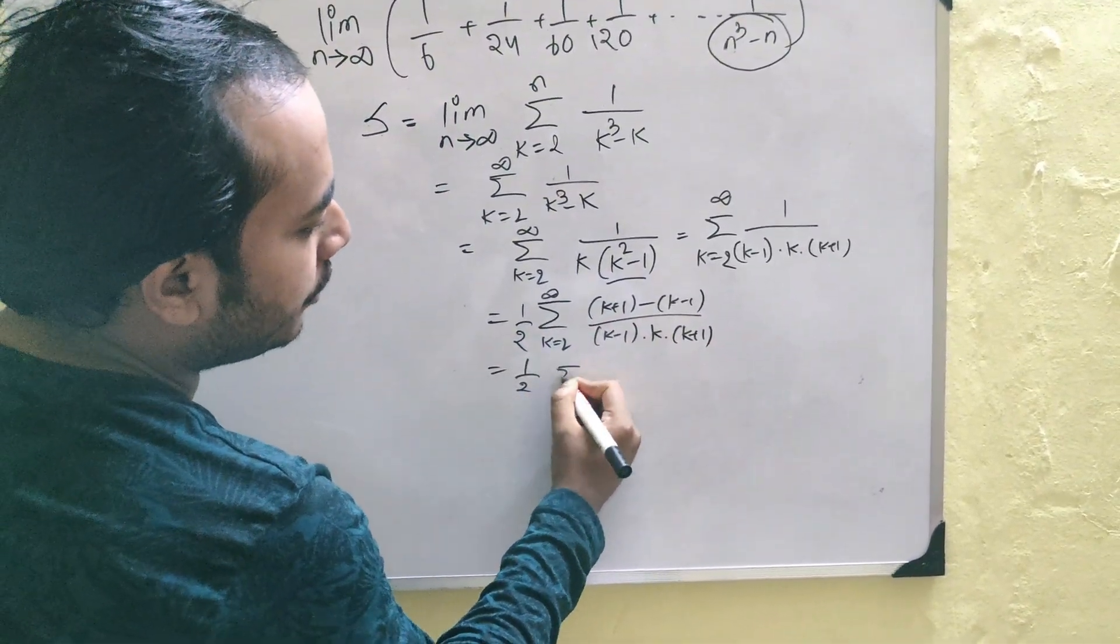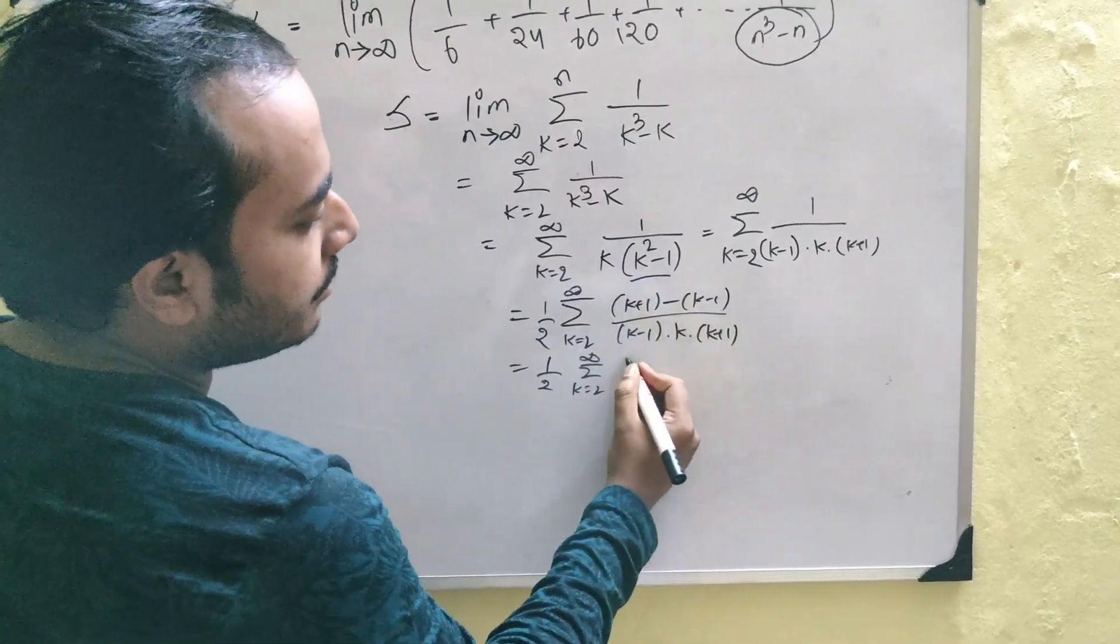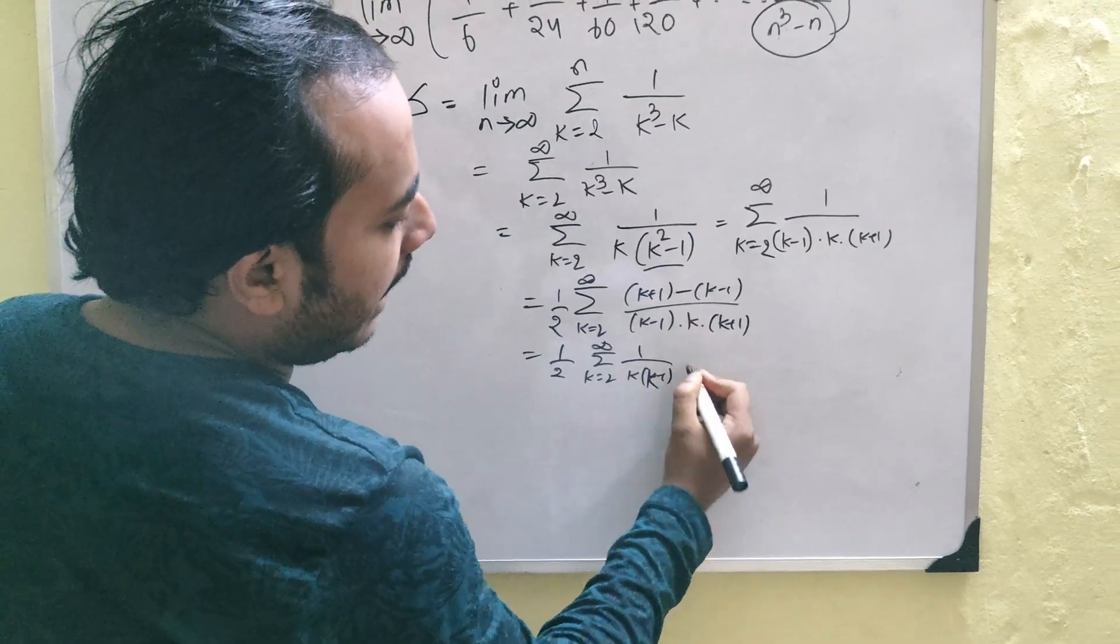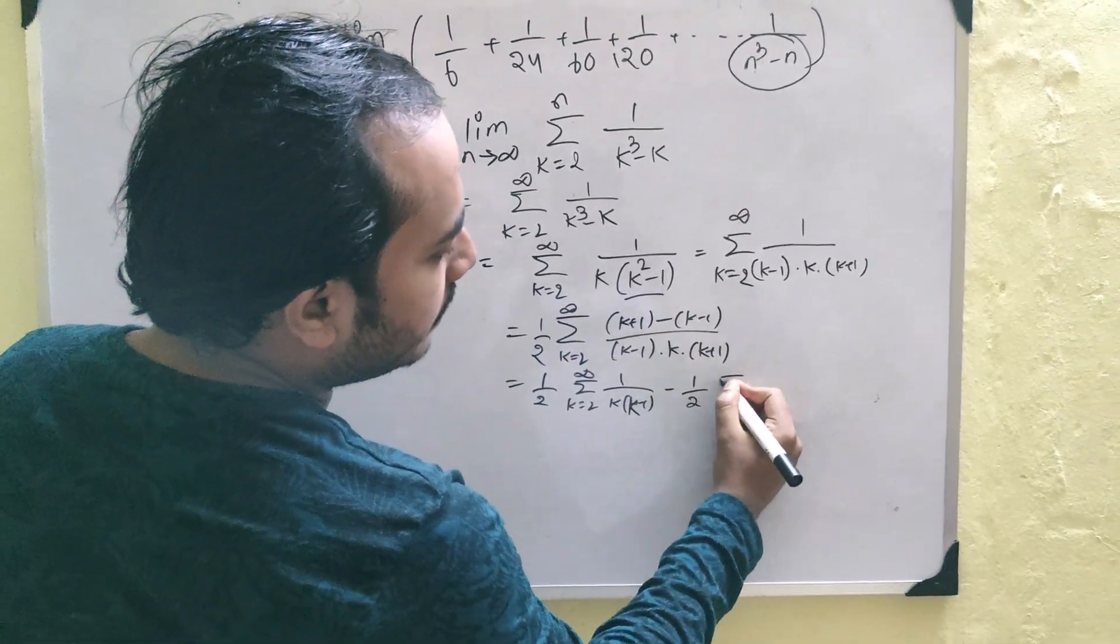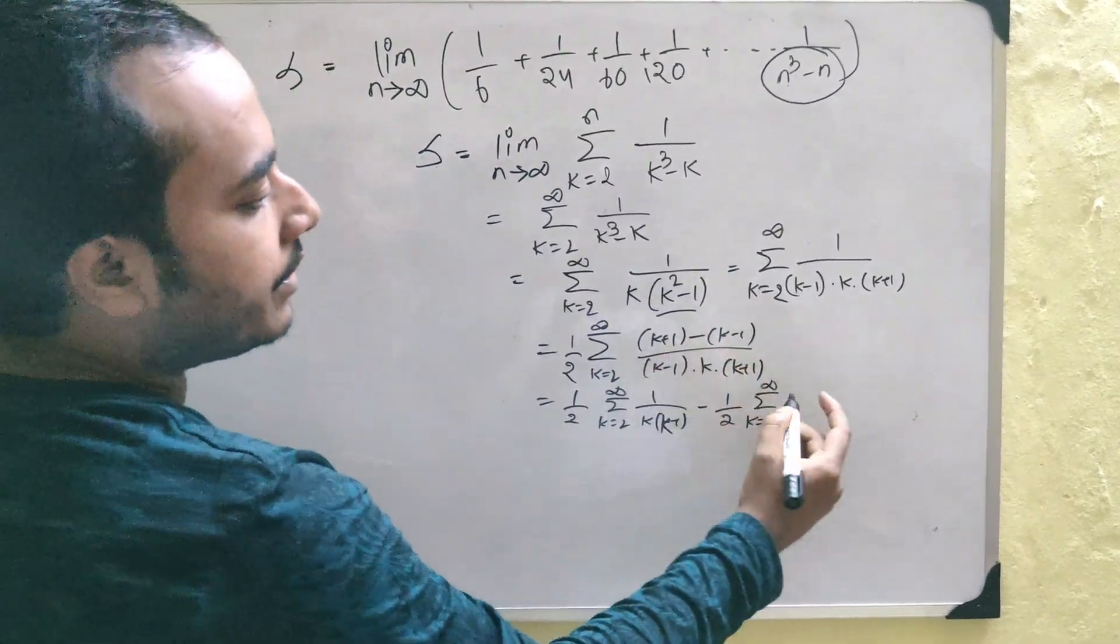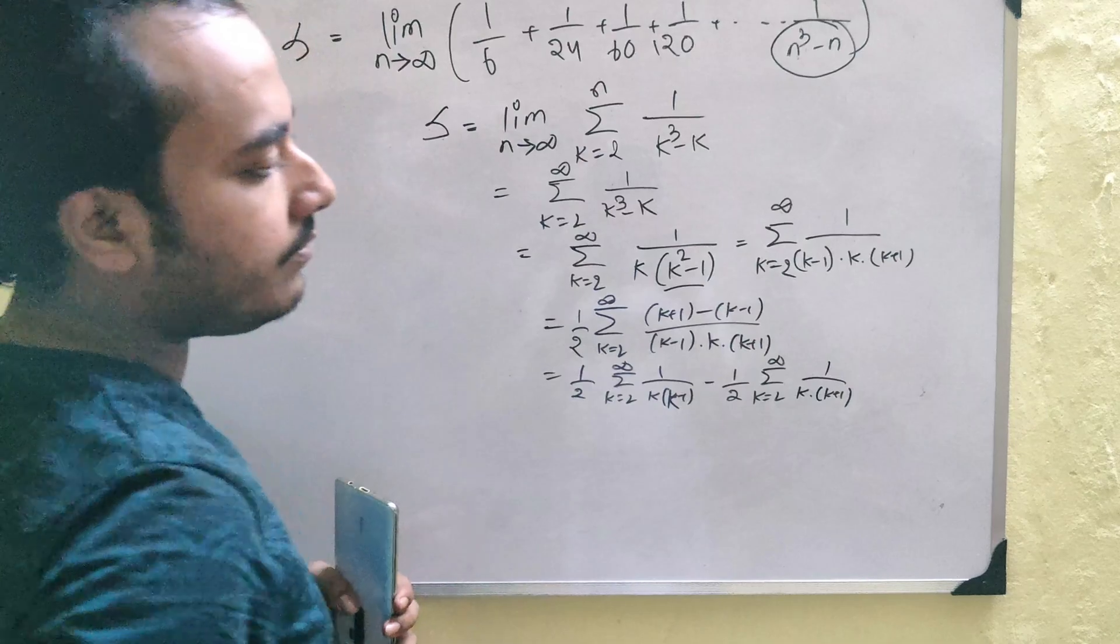Do the distributive law. You should get k equals to 2 to infinity. So, k plus 1 divided by this would give you k into k minus 1, correct? And half summation k equals to infinity again. This k minus 1 divided by the whole string should give you 1 by k into k plus 1, correct?